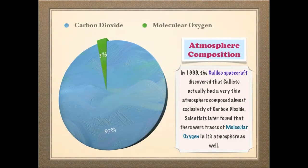This pie chart shows the composition of Callisto's atmosphere. As you can see, it is mostly composed of carbon dioxide at 97%, with a small amount of molecular oxygen, which I estimated at 3% because an exact percentage wasn't provided.